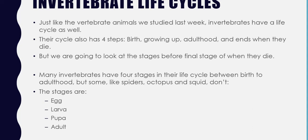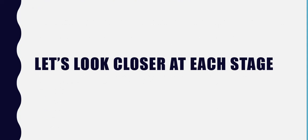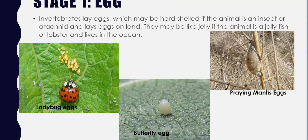The four stages that most invertebrates have are the egg stage, the larva stage, the pupa stage, and the adult stage. Stage one is the egg stage. Invertebrates lay eggs just like reptiles, fish, birds, and amphibians. They can be hard-shelled if the animal is an insect or an arachnid — which is a fancy word for spider. They are hard if they lay eggs on land, but they are more jelly-like if the animal lives in the ocean. Hard if they live on land, more jelly if they live in water.